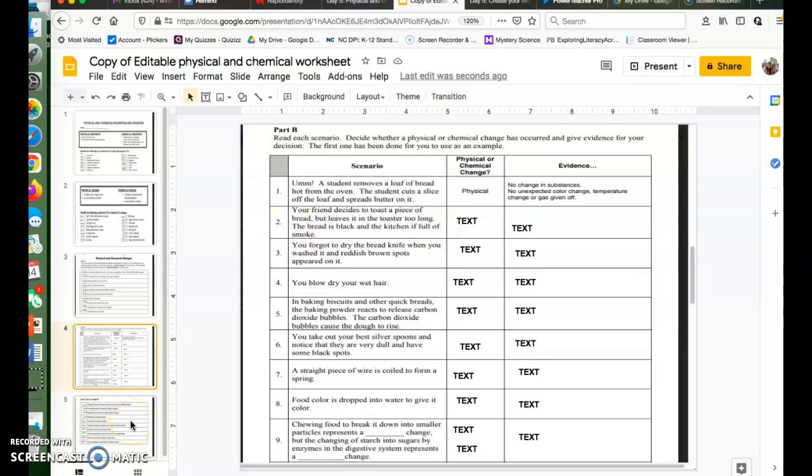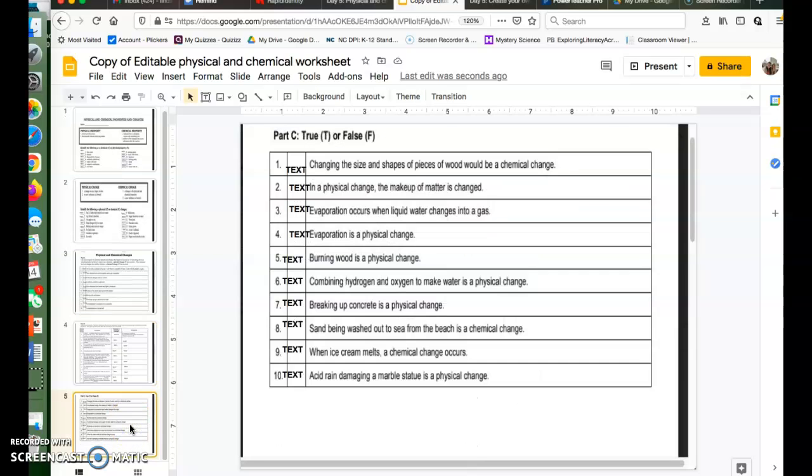A chemical change has happened. A new substance is formed, that charcoal on the toast. The charred toast is now a new substance. And then you're going to go through the rest of it. All right, last slide. You are going to answer true or false. Changing the size and shape of pieces of wood would be a chemical change. We know that's false, it would be a physical change. You type F right here. You can do the rest on your own.